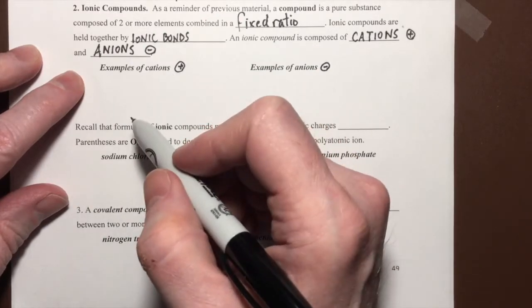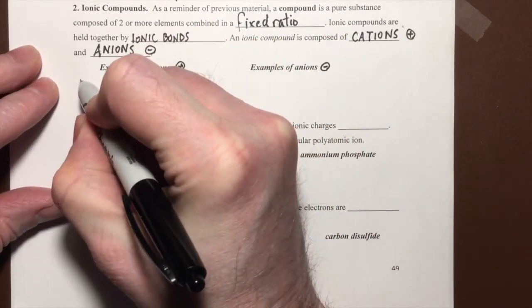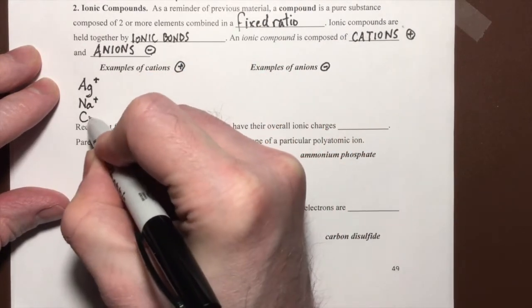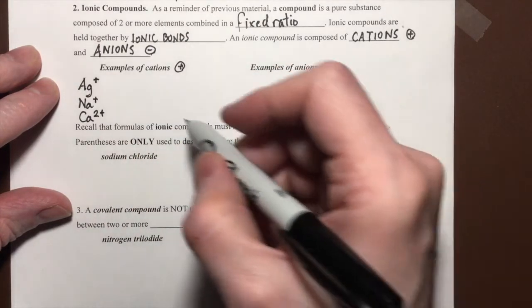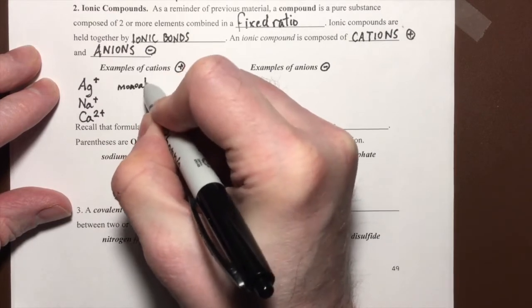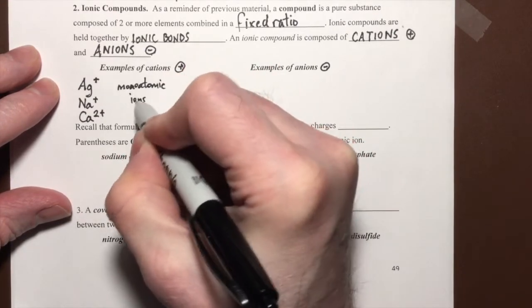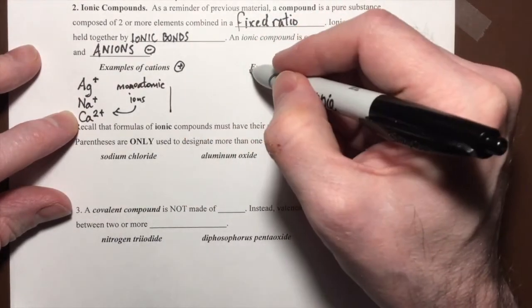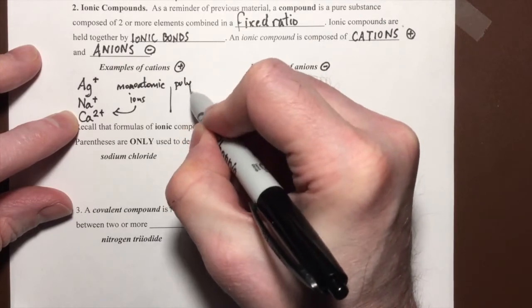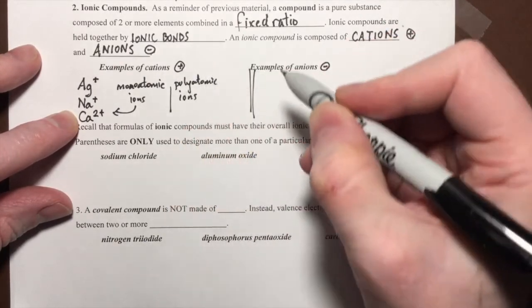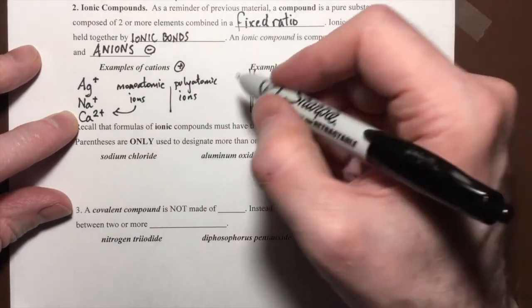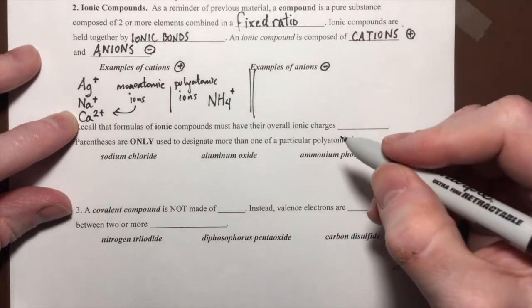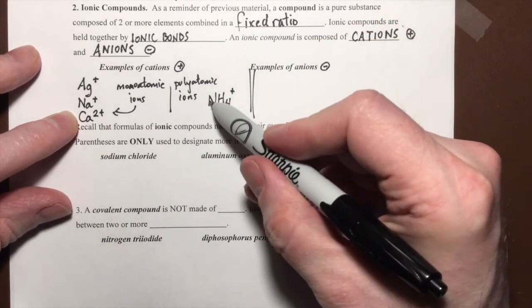So let's write some examples now of some cations, some positively charged ions. So we have silver, we have sodium, we have calcium, and those are all monoatomic. In contrast we're going to have polyatomic ions and the polyatomic cation that we're mainly going to see appear again and again is NH4 with a positive charge. You may recall that that's called an ammonium cation.